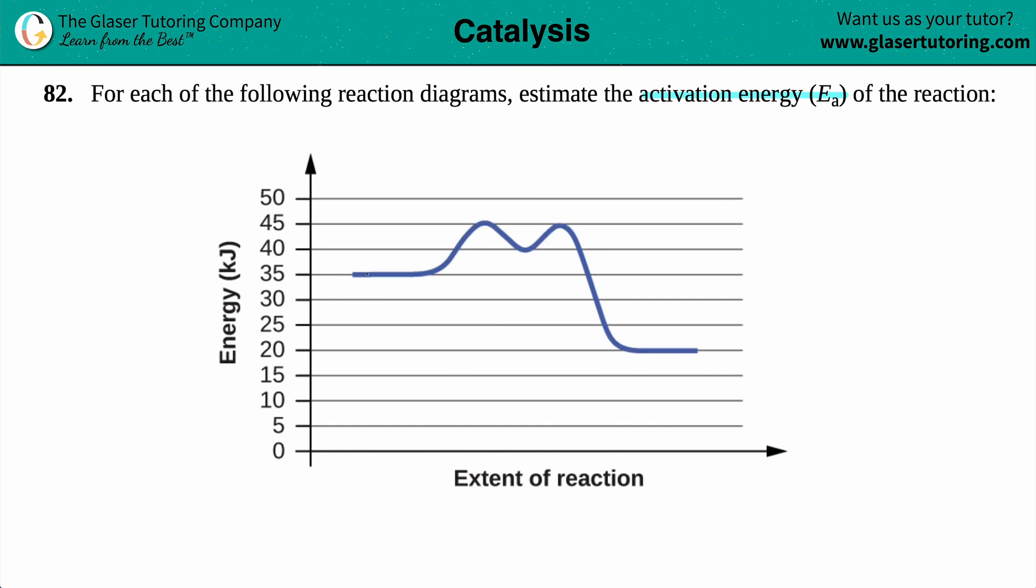This is your starting material, this horizontal line. This represents the energy for your reactants. On the flip side, as we go all the way down to the end, this horizontal line tells us the energy needed for the products.